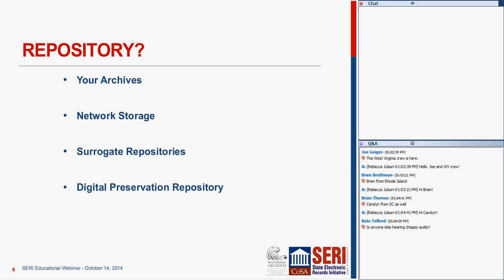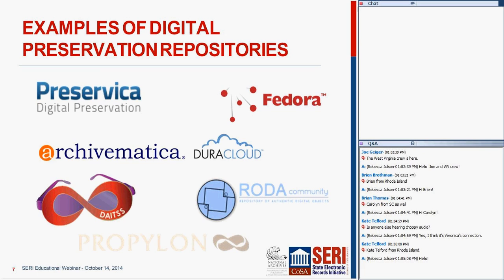Finally, there is the digital preservation repository, often referred to as a trustworthy digital repository. The TDR is the preservation repository storage environment plus more—all those policies, procedures, planning, governance, and all the other pieces that go into ISO 16363. For a digital preservation repository, you're taking storage and adding to it: incorporating microservices like file format identification or checksum verification, or bundling metadata with the digital file to create a digital object that's managed over time.